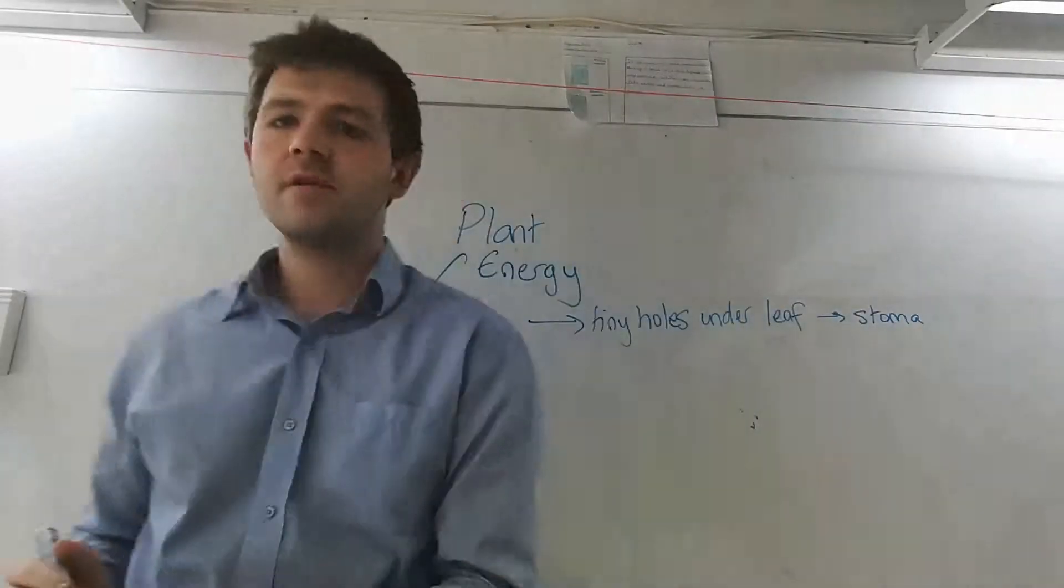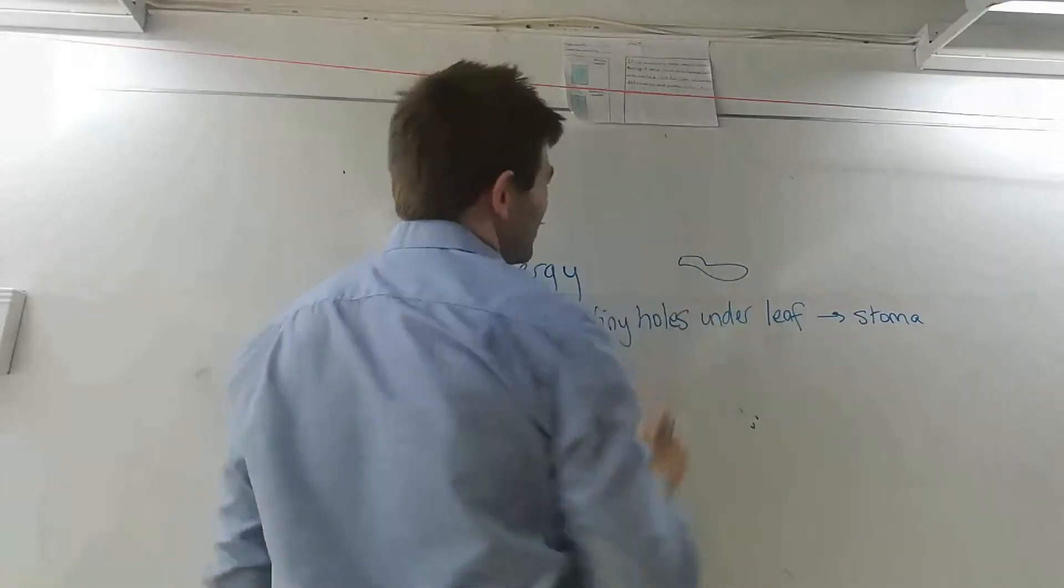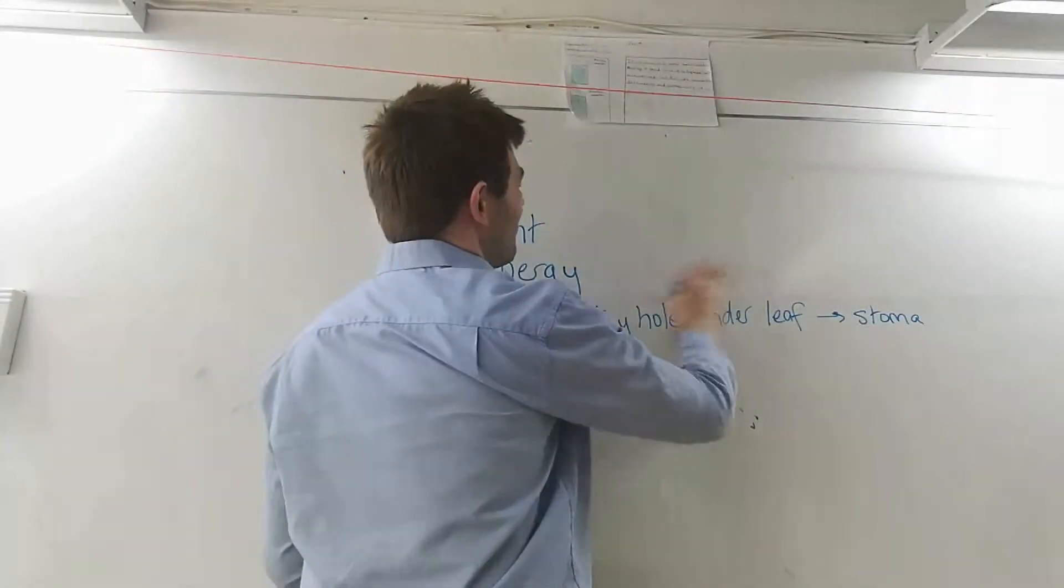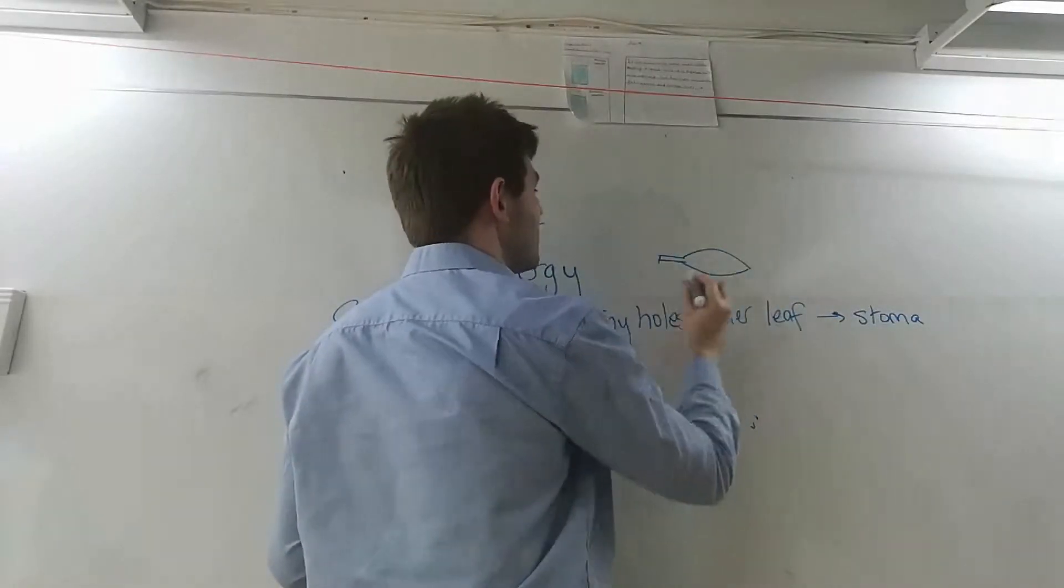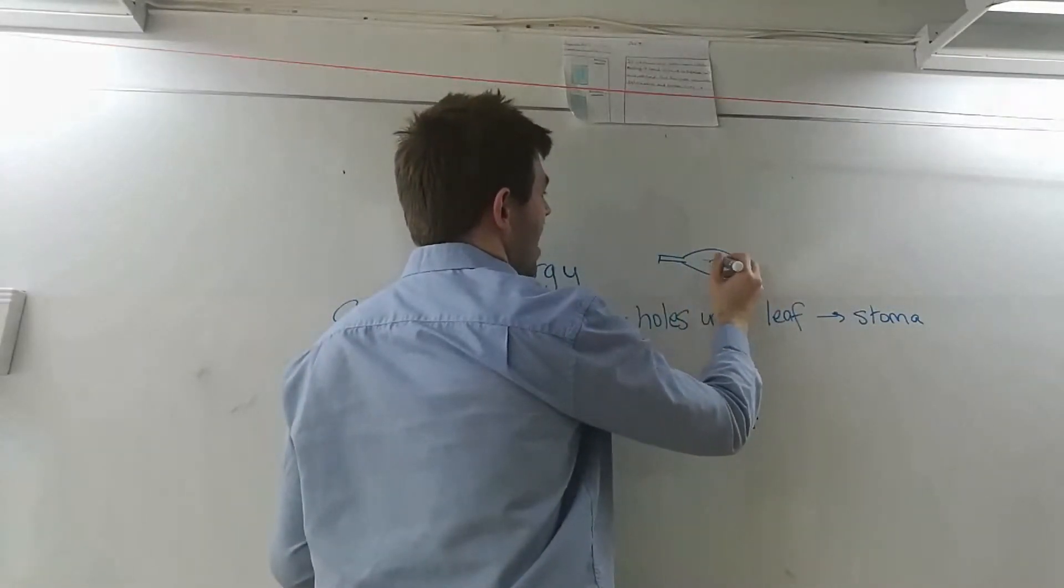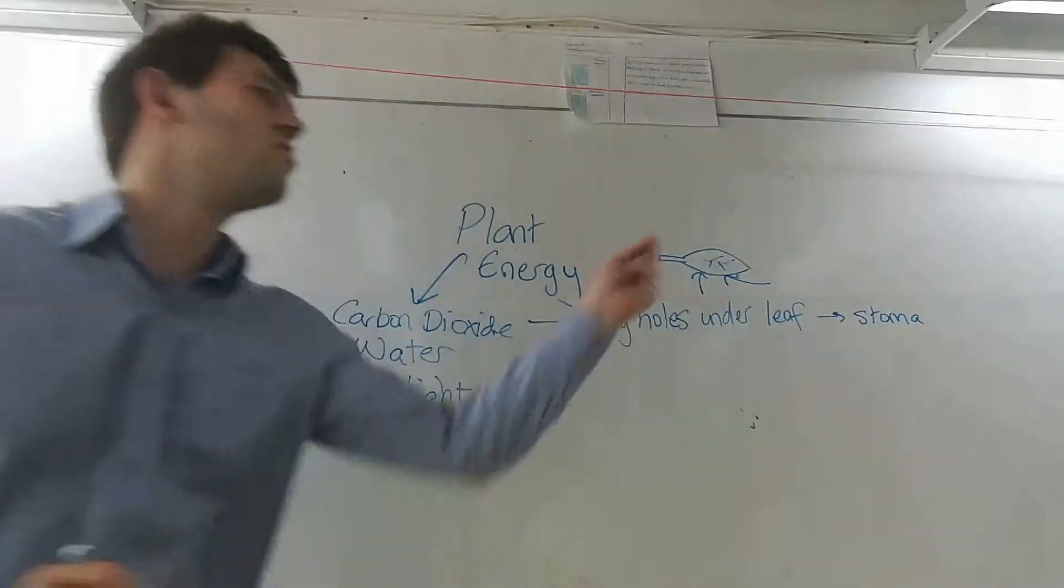stomata. So if I draw my leaf, here is my leaf. I'll do a better one. There. I would have underneath here little holes called the stomata.